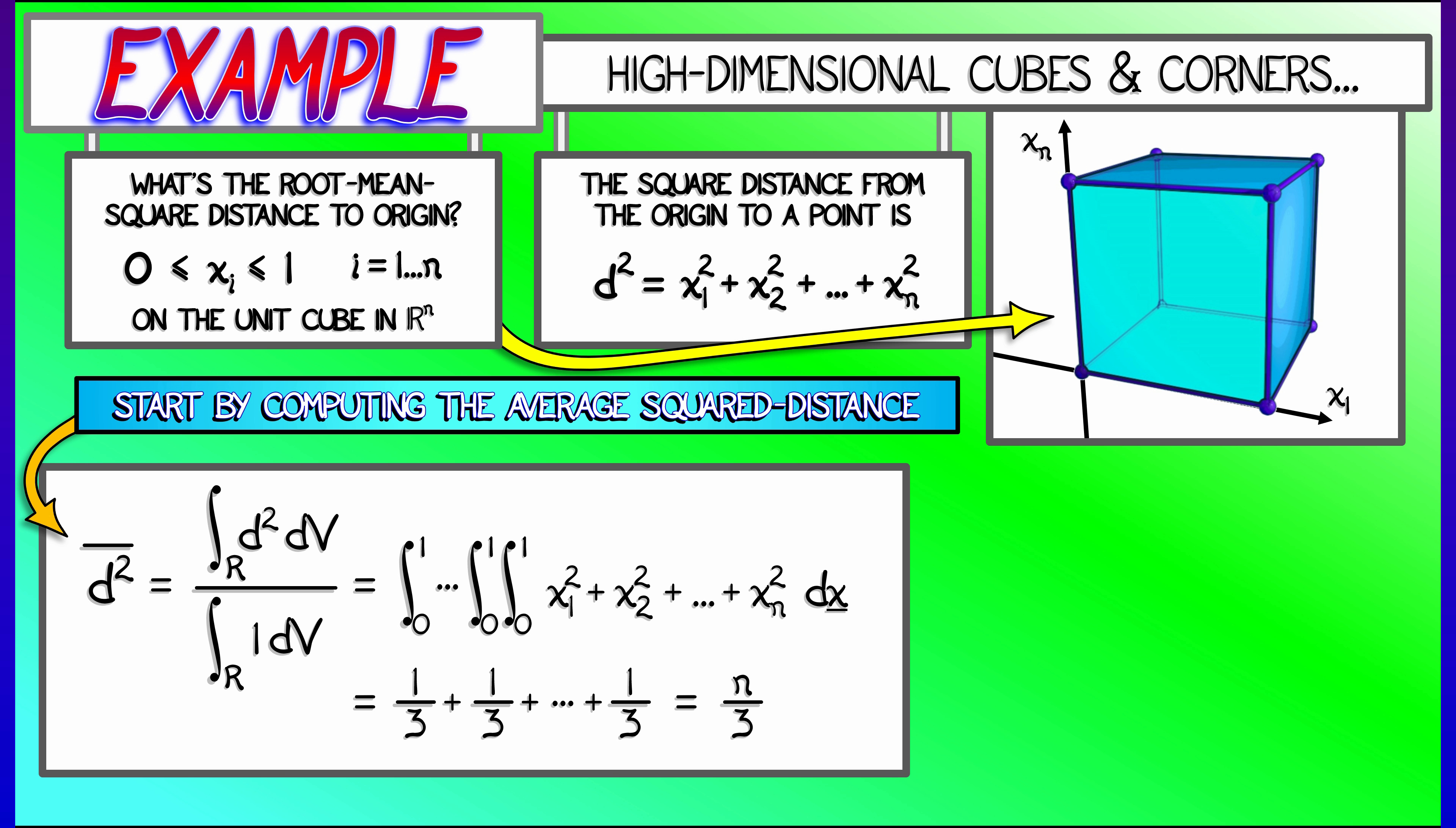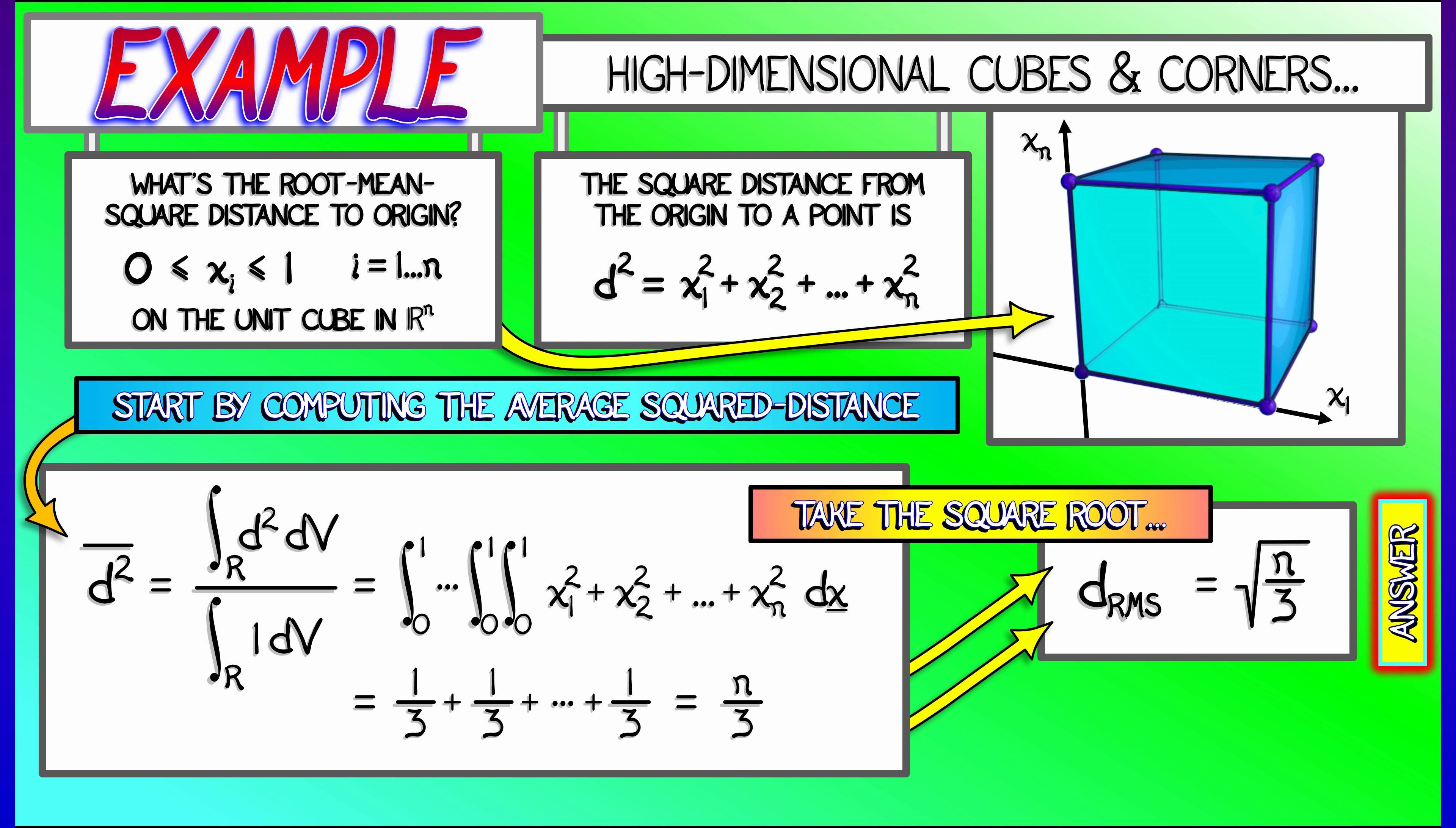And that is going to be the average square distance. To get the root mean square average, we take the square root of this result, and that's it. That's our answer. That's square root of n over 3.